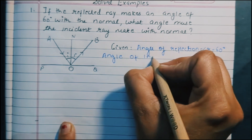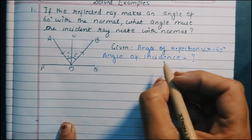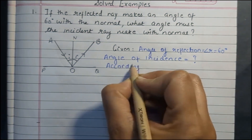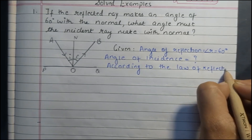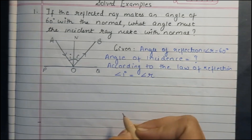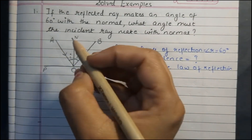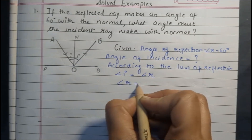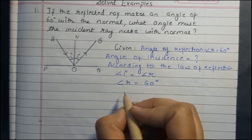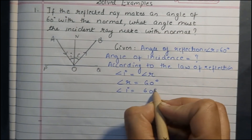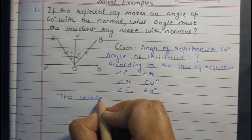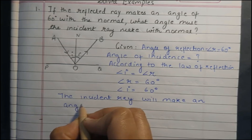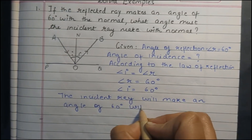The angle of incidence is what is asked. According to the law of reflection, angle of incidence is equal to the angle of reflection. That means angle AON is equal to angle NOB. If the angle of reflection is given as 60 degrees, then the angle of incidence will also be 60 degrees. So the incident ray will make an angle of 60 degrees with the normal.